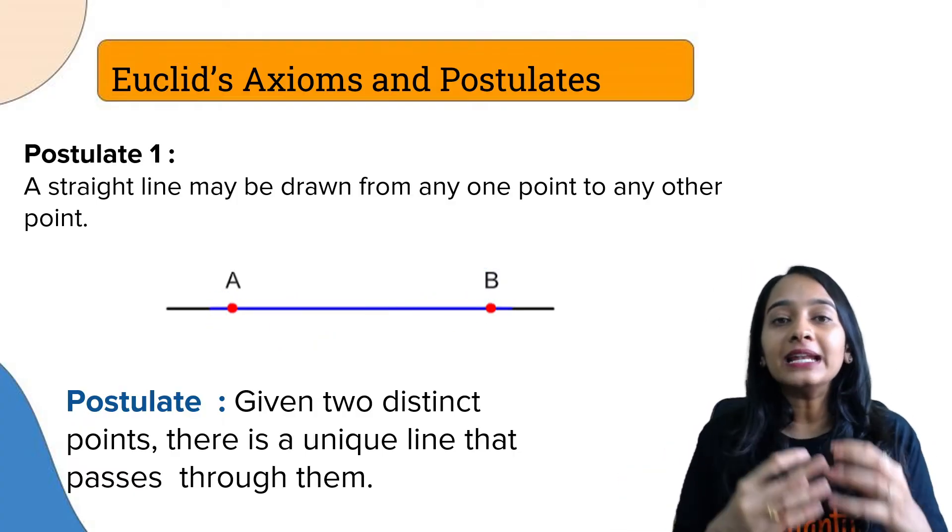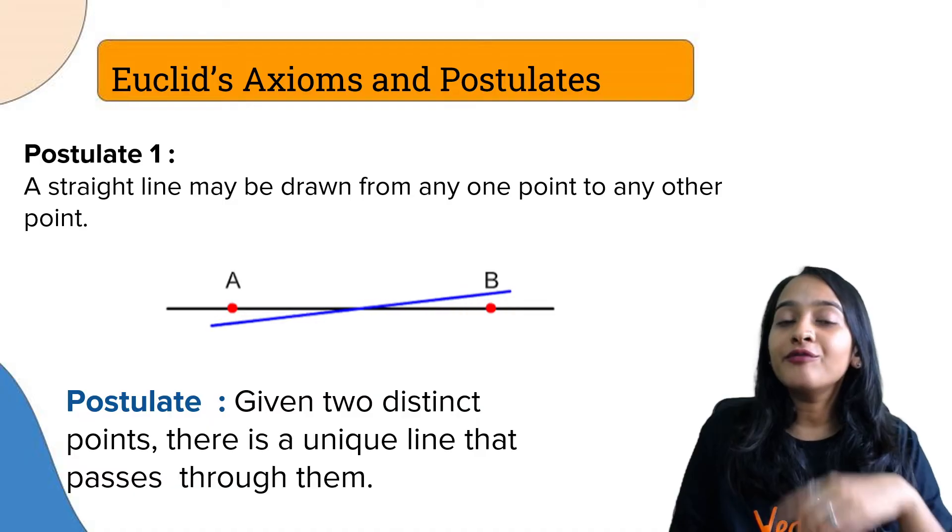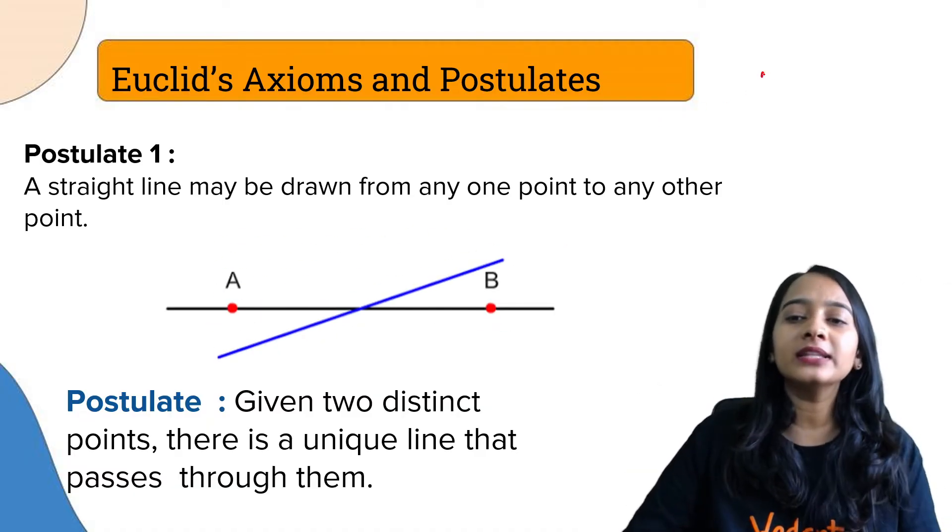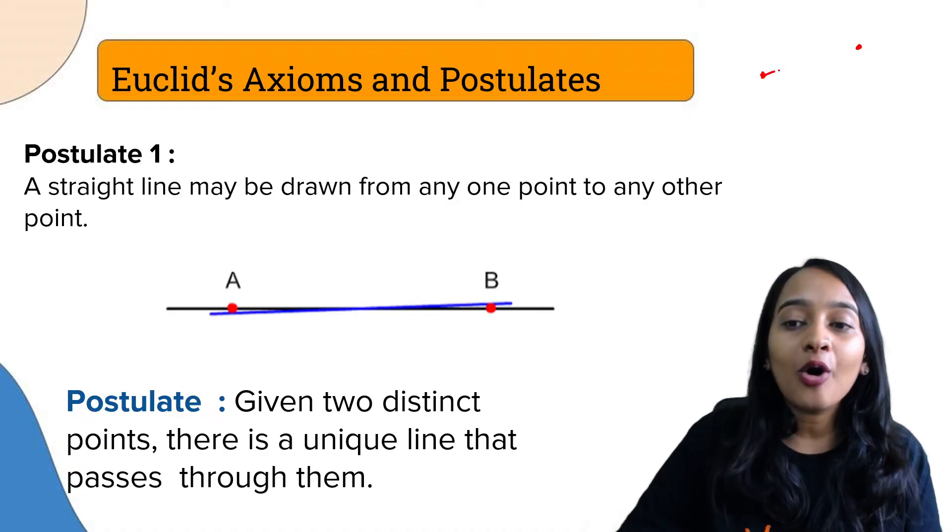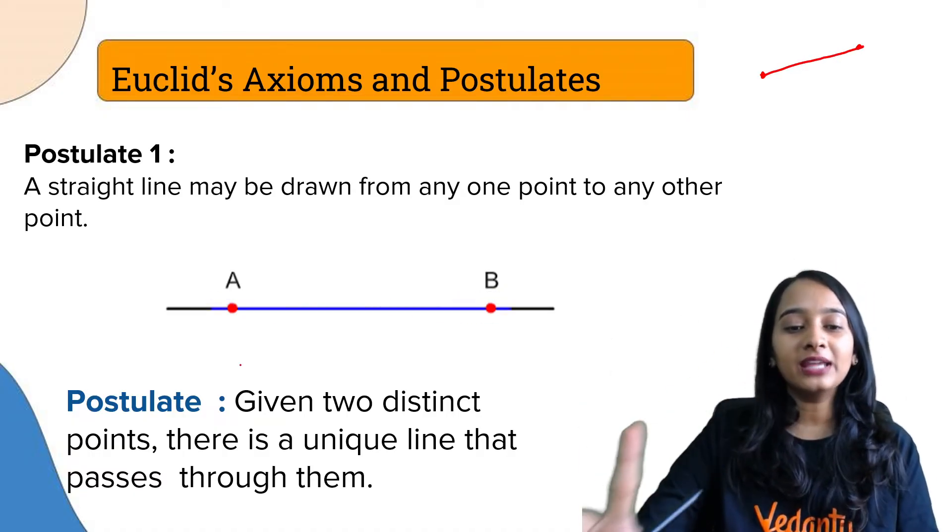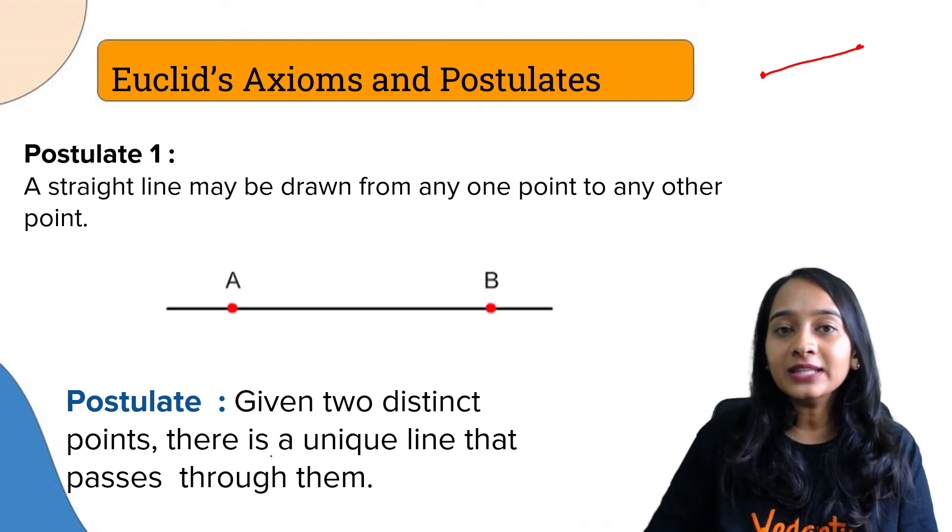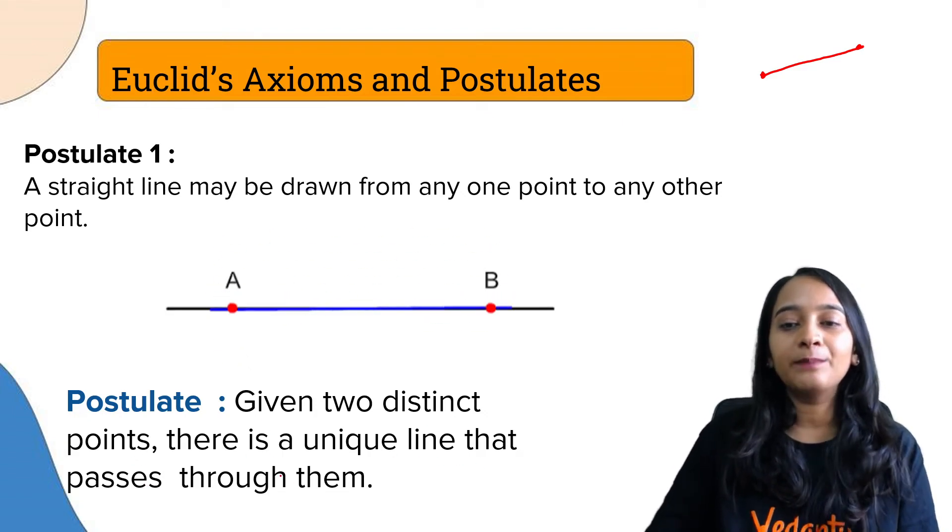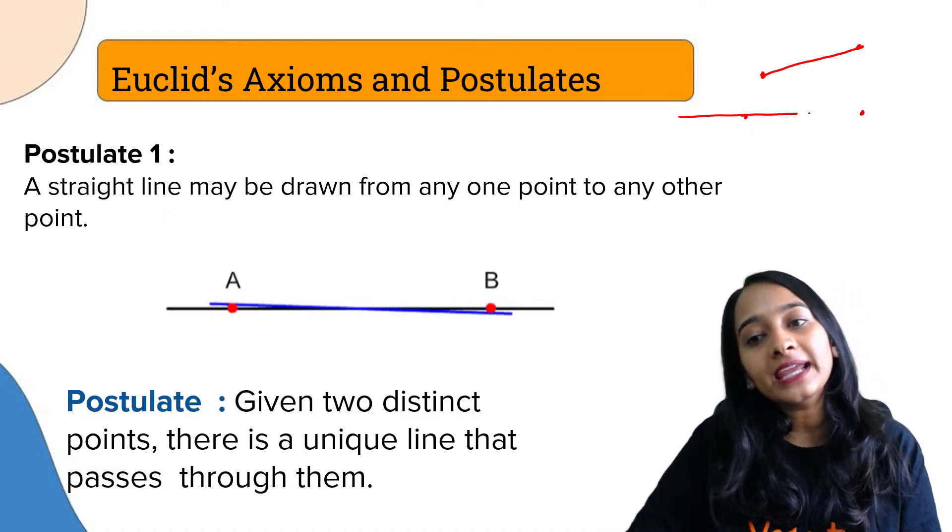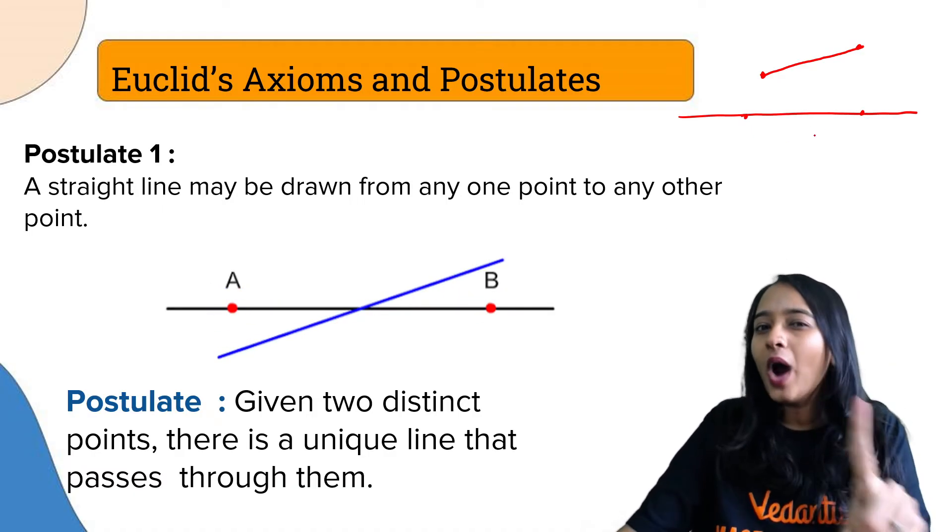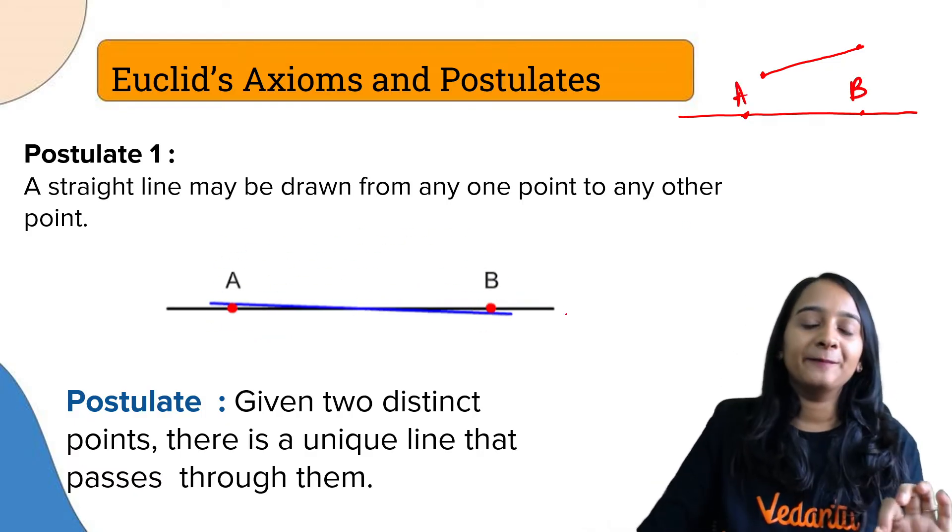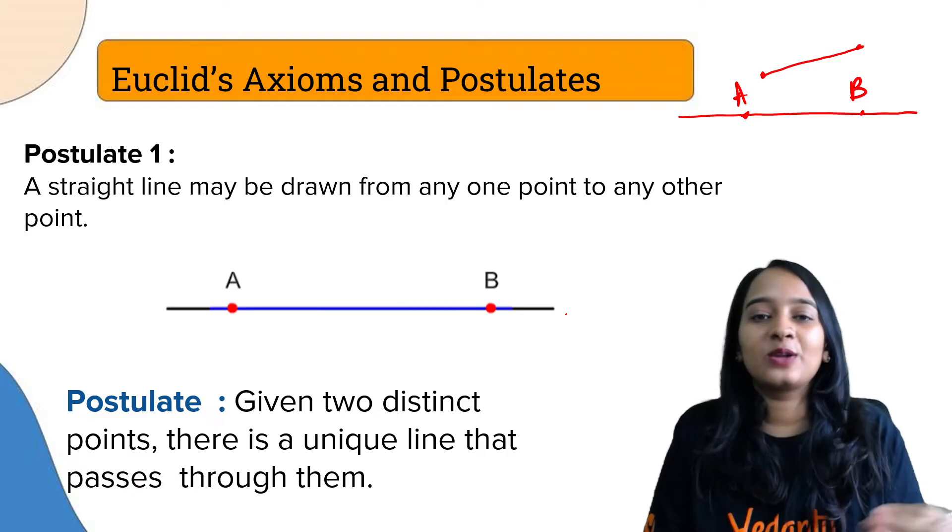First postulate: a straight line may be drawn from any one point to the other point. Given two distinct points, there is always a unique straight line that can be drawn from one point to the other. Given two distinct points, there is only just one line that passes through both A and B. That one line is called a unique line.